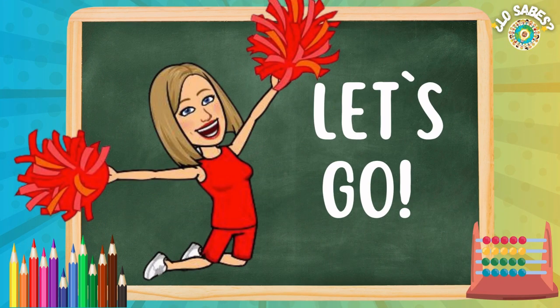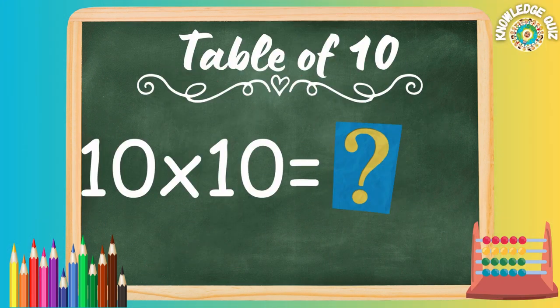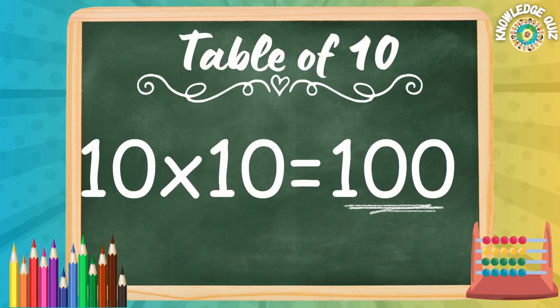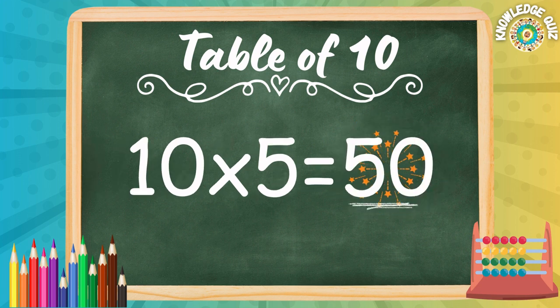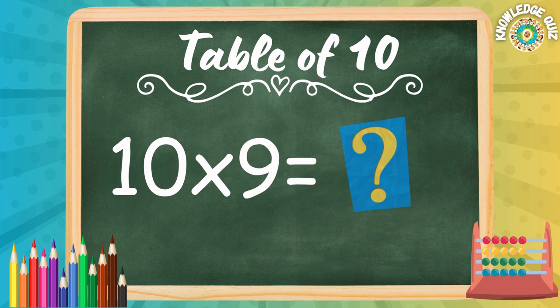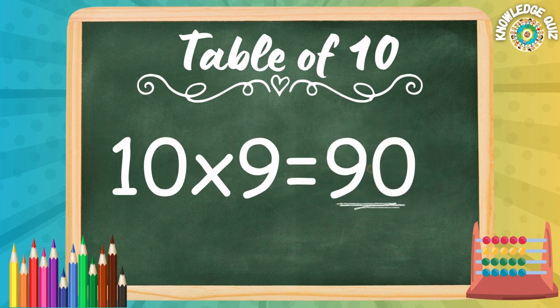Let's go! 10 tens are... 100. 10 fives are... 50. 10 nines are... 90.